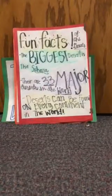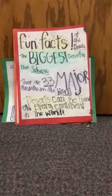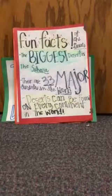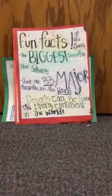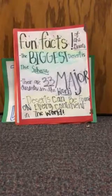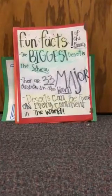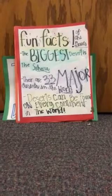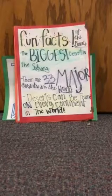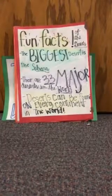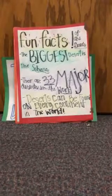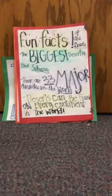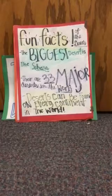Fun facts of the desert. The biggest desert is the Sahara Desert. There are 33 major deserts in the world. Deserts can be found on every continent in the world.